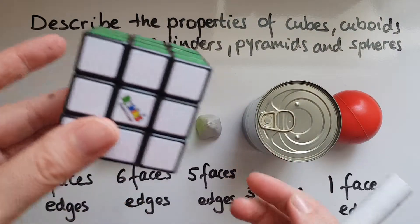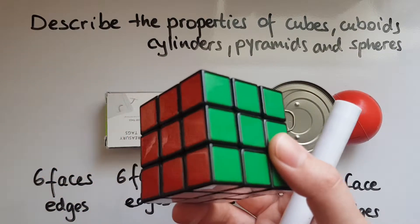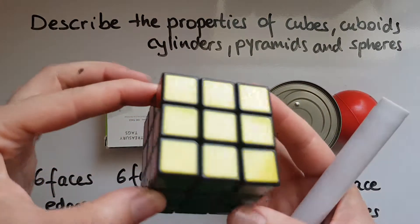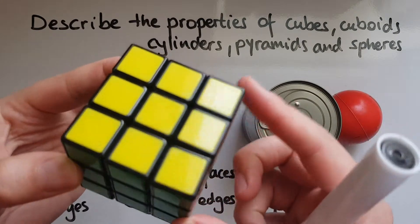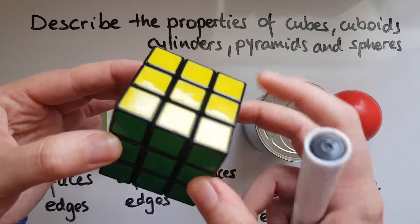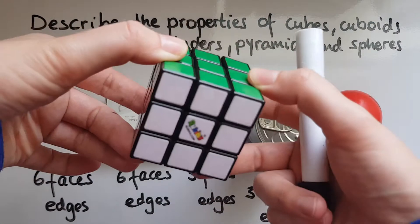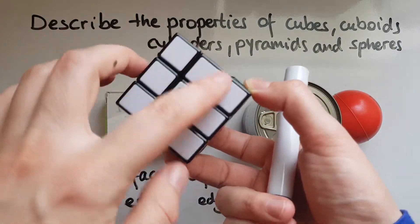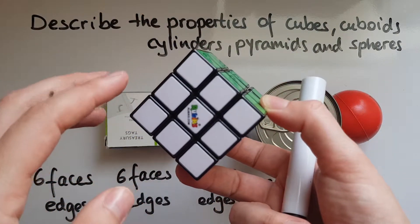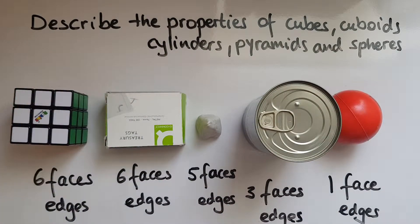How many edges does a cube have? Counting: one, two, three, four, five, six, seven, eight, nine, ten, eleven, twelve. So there are 12 edges.